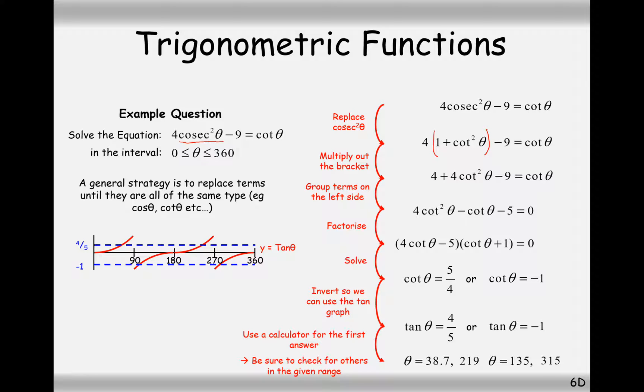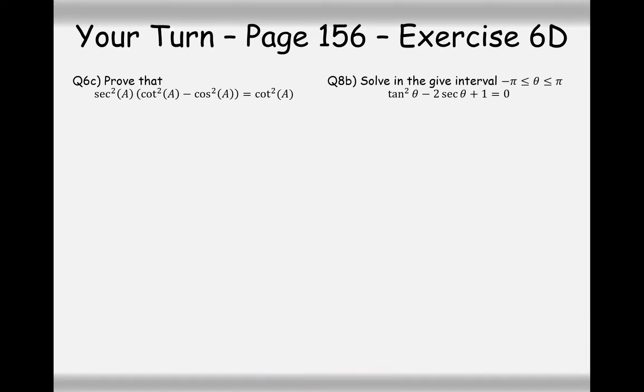Remember the identity is cosec²=1+cot². Let's now have a go at these two questions on your own - pause the video and try these ones out.